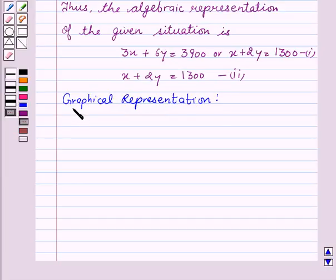From above, we see that the two equations are X plus 2Y equal to Rs. 1300 for our first equation, and second equation is X plus 2Y equal to Rs. 1300. We see that both equations are the same. So, we will find two solutions for these equations.